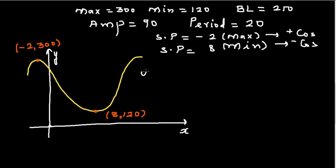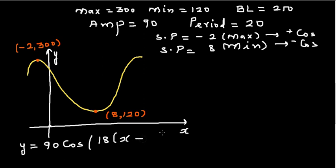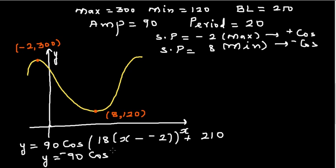Writing the equations: 360 divided by 20 is 18. The first equation is y = 90 cos(18(x − (−2))) + 210, which simplifies to y = 90 cos(18(x + 2)) + 210. The second equation starting at minimum is y = −90 cos(18(x − 8)) + 210.